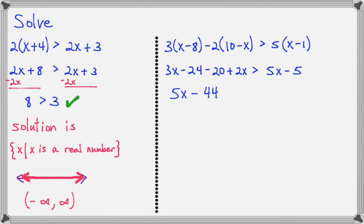Now let's combine X terms. We'll have 5X, and then combine constants and we get minus 44. And the right side is still 5X minus 5. Now notice again that the X terms on each side are alike, so if we combine our X terms or if we eliminate one X term, we eliminate them both.